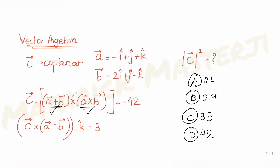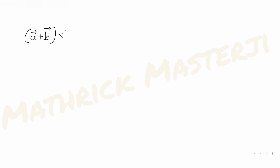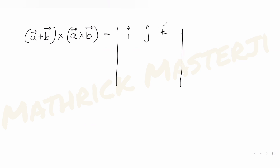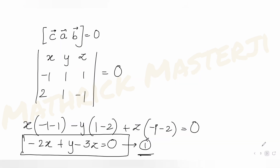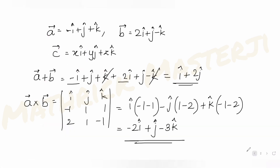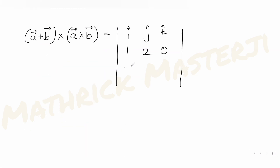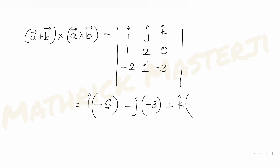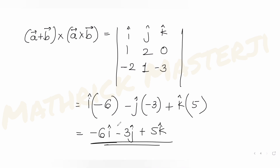Now let's compute (a+b) cross (a×b). Setting up the determinant with a+b = (1, 2, 0) and a×b = (−2, 1, −3), we get i(−6 − 0) minus j(−3 − 0) plus k(1 + 4), giving minus 6i plus 3j plus 5k.